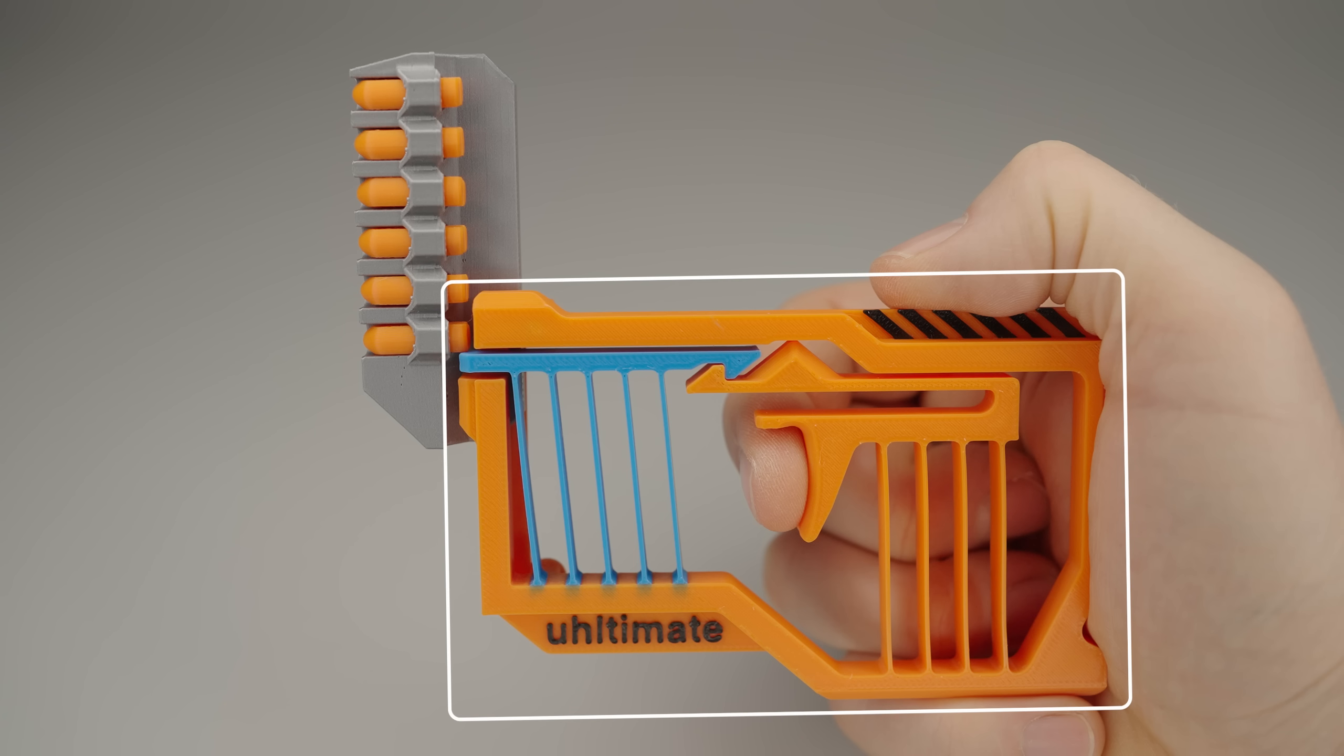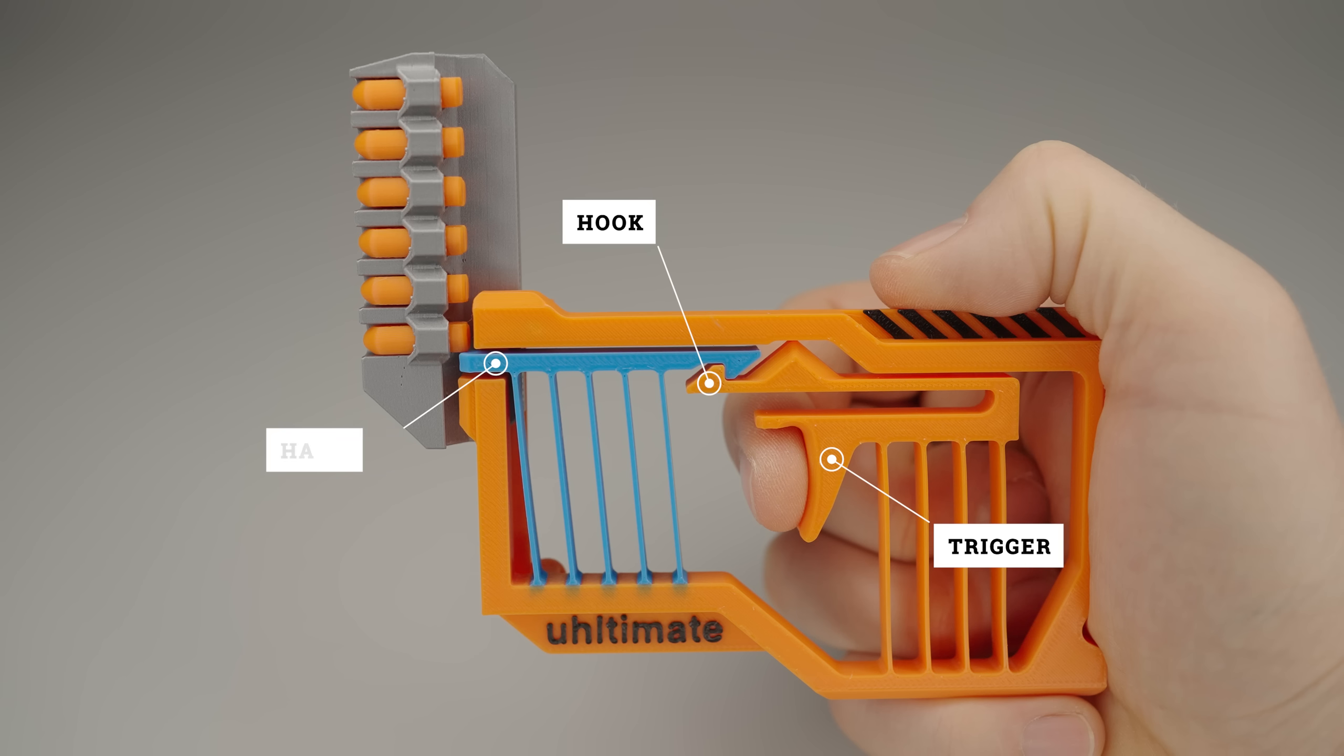Now let's focus on the blaster. We've got the trigger, which has a hook that latches onto the hammer. The hammer is responsible for firing the bullets.